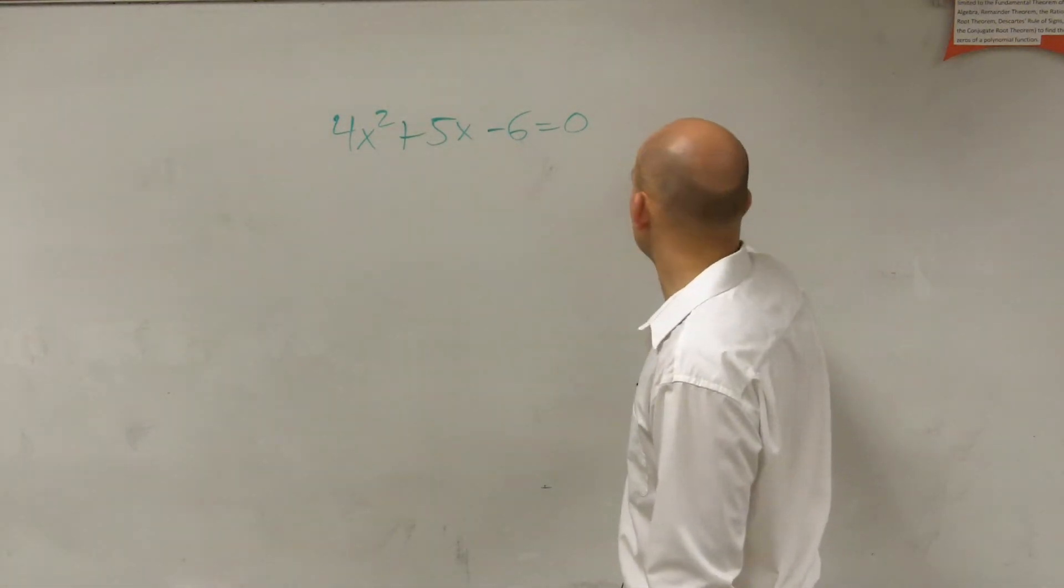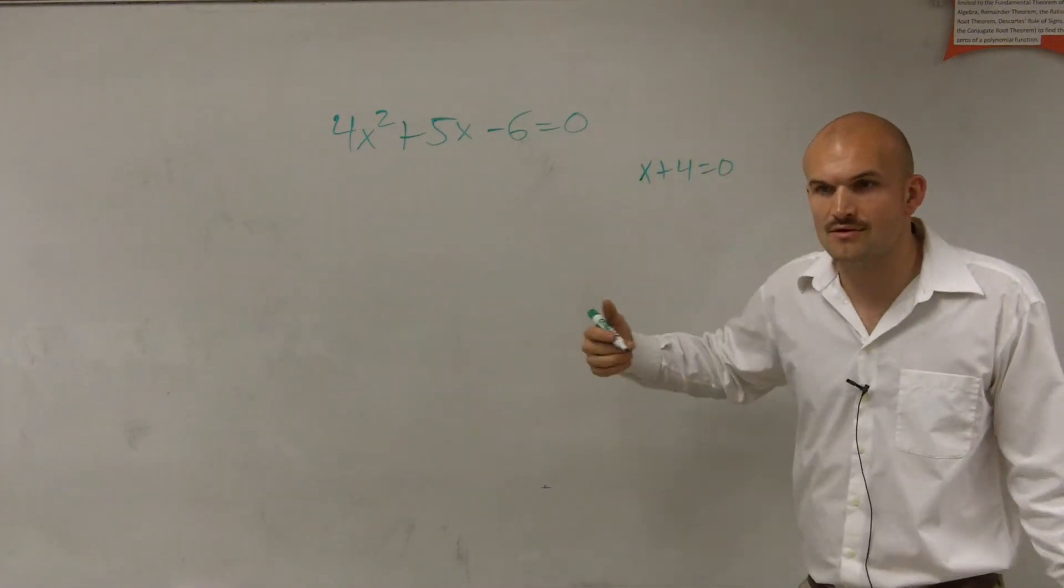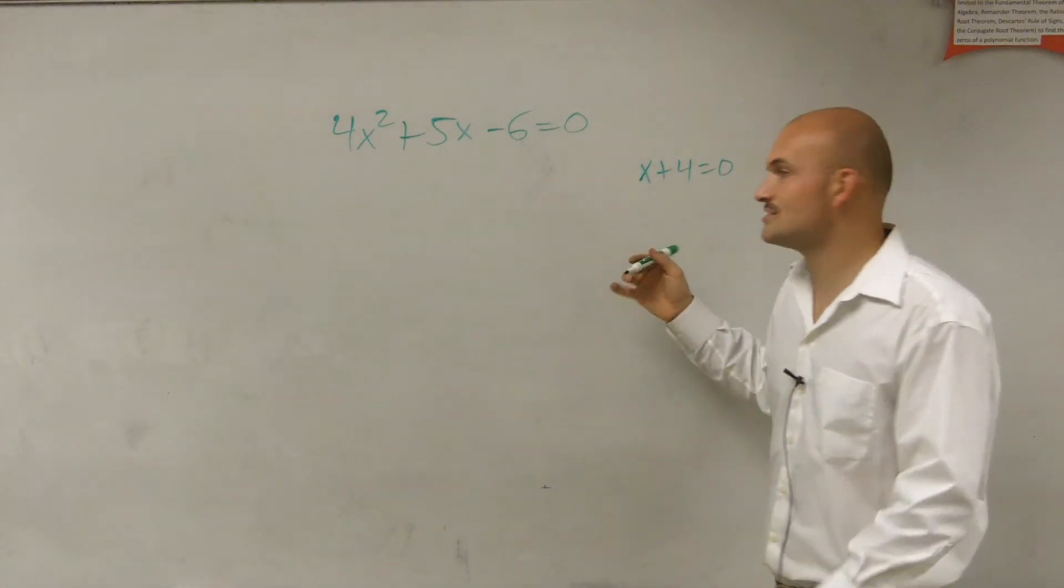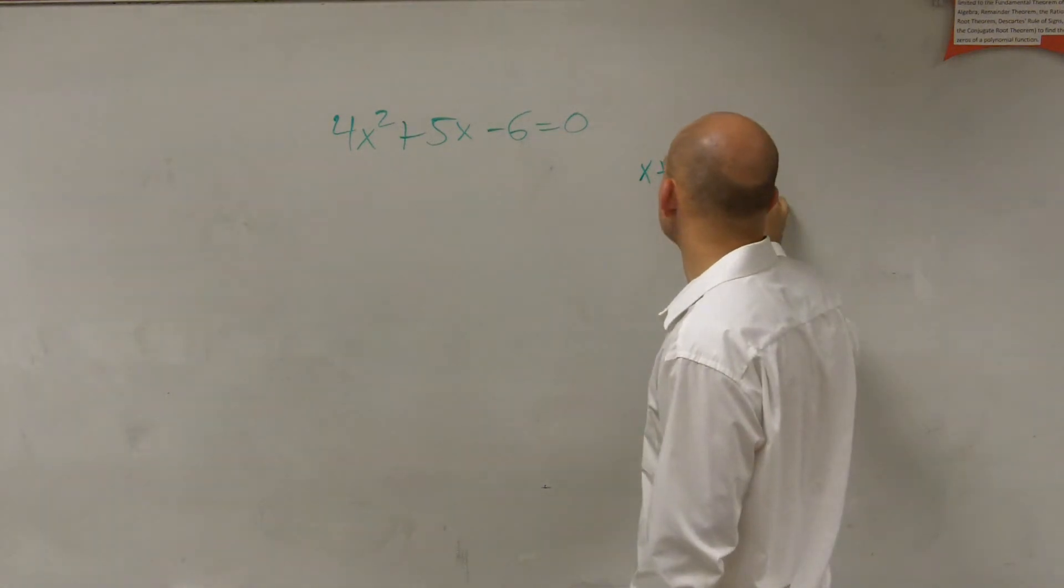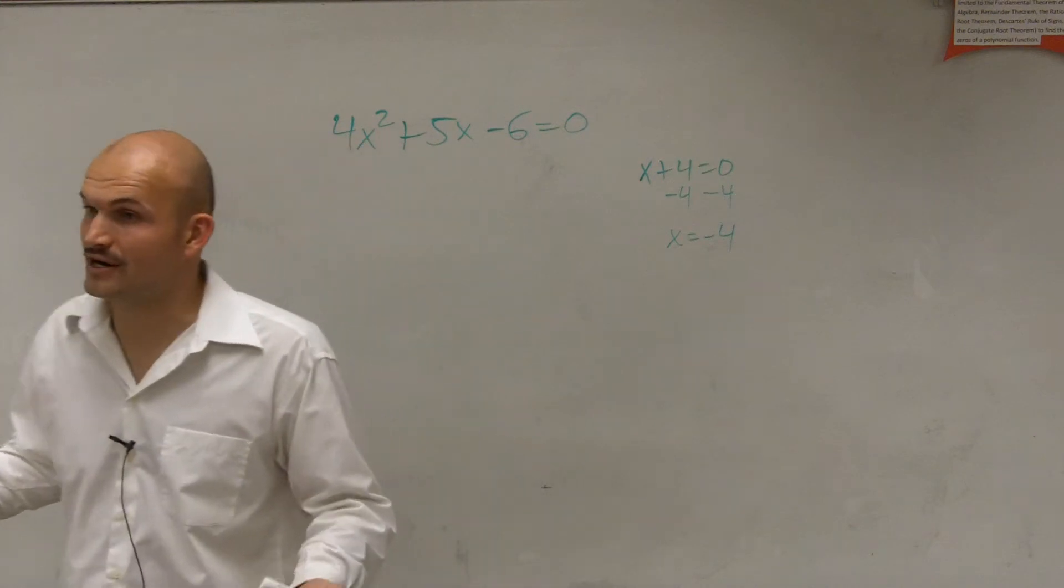So before, ladies and gentlemen, if I had like x plus 4 equals 0, when I wanted to solve for x, what did we do? We did the inverse operation, right? And we isolated the variable. That was an important thing. We wanted to isolate the variable.